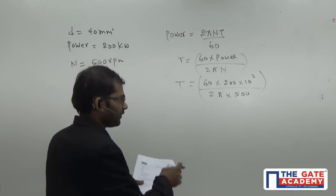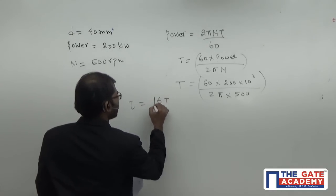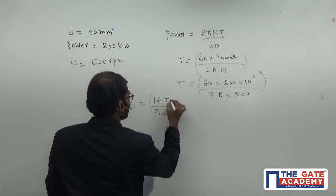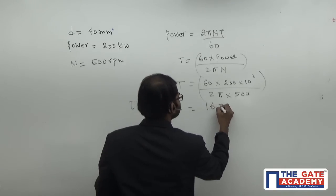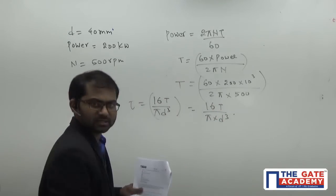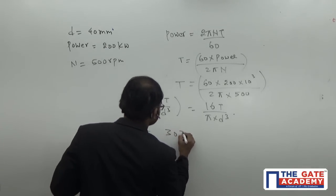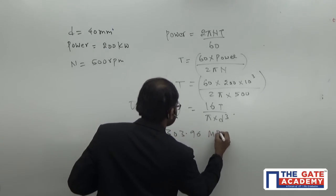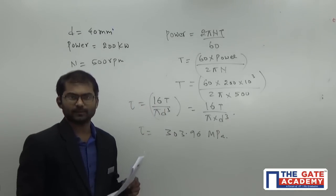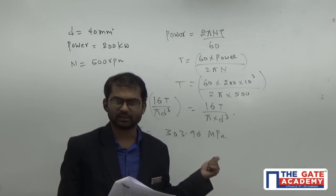For a shaft, the maximum shear stress formula is 16t/(πd³). Substituting the value of torque and diameter, we get the shear stress as 303.96 megapascals. Since they're asking in terms of megapascals, the answer is 303.96 MPa.